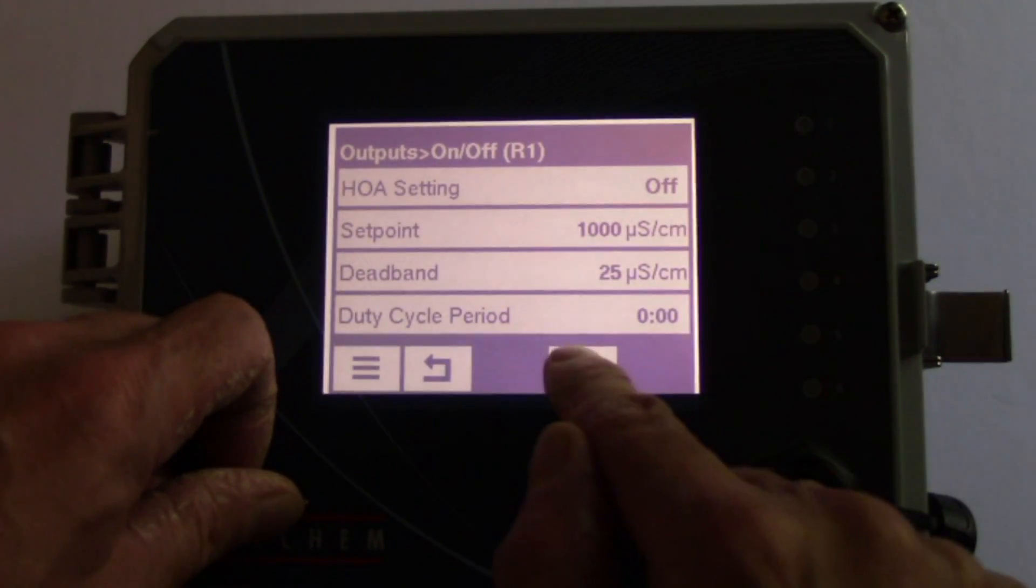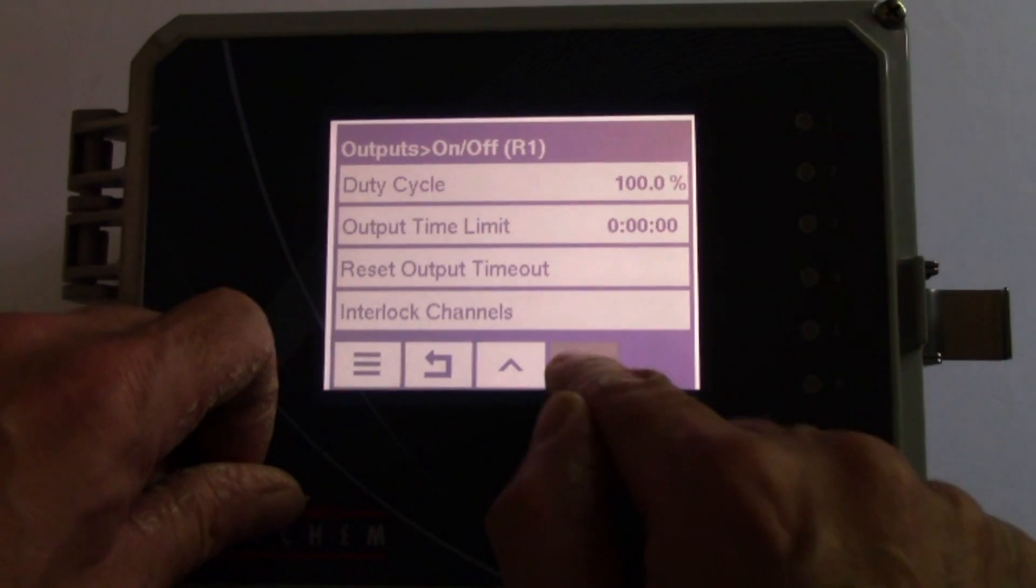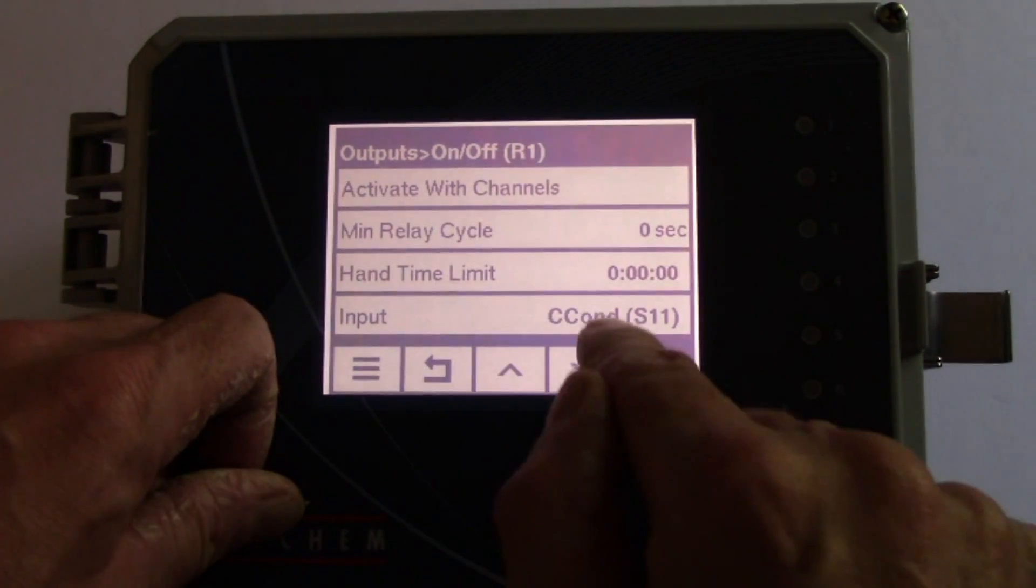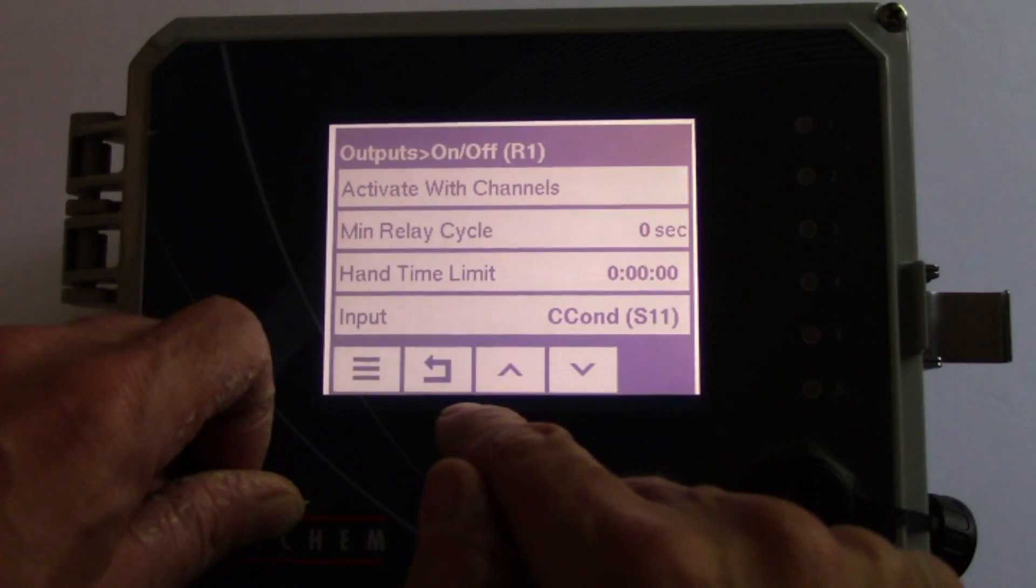And then hit the settings again, just to make sure the input is the conductivity sensor you programmed for sensor input number 1.